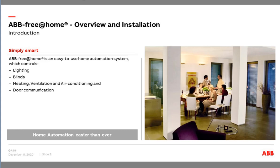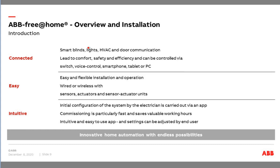What are the three main aspects of Free at Home? First of all: Connected. Connected means we have a connected system where all different applications — lights, HVAC, door communication — can be controlled with one system, and also can be controlled with the same switches, with voice control, with one Free at Home app, or also with your tablet or PC.